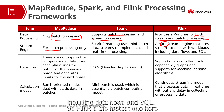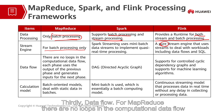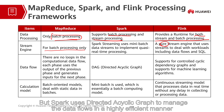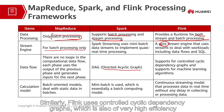So Flink is the fastest one here. Thirdly, data flow: for MapReduce, there are no loops in the computational data flow. But Spark uses directed acyclic graphs to manage the data flows in a highly efficient manner. Similarly, Flink uses controlled cyclic dependency graphs, which is also of very high efficiency.